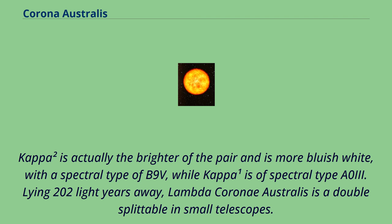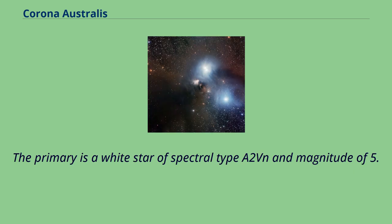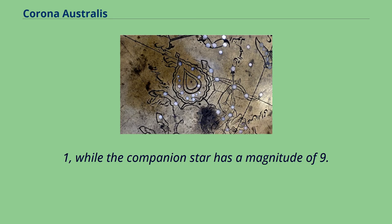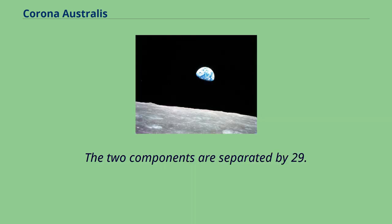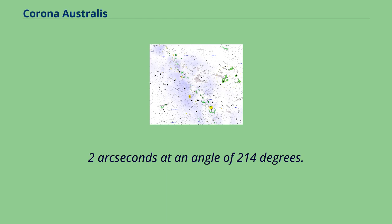Lying 202 light-years away, Lambda Coroni Australis is a double splittable in small telescopes. The primary is a white star of spectral type A2VN and magnitude of 5.1, while the companion star has a magnitude of 9.7. The two components are separated by 29.2 arcseconds at an angle of 214 degrees.